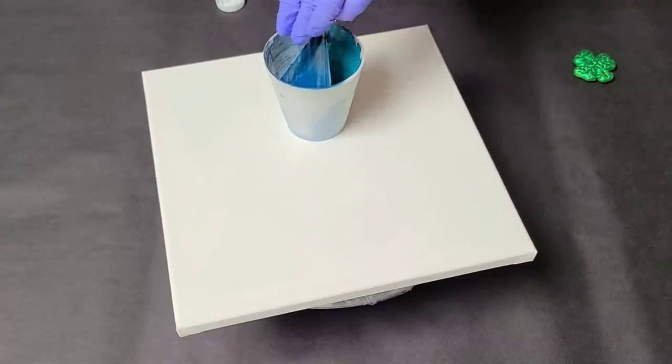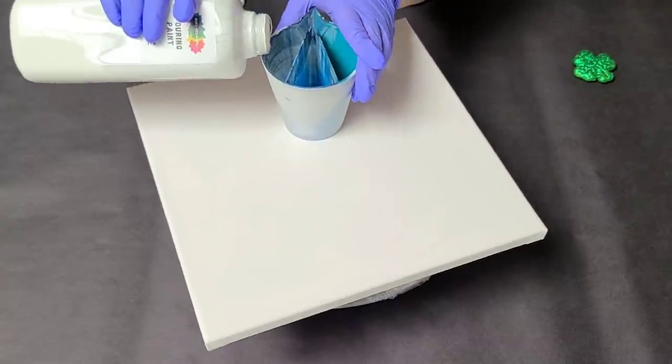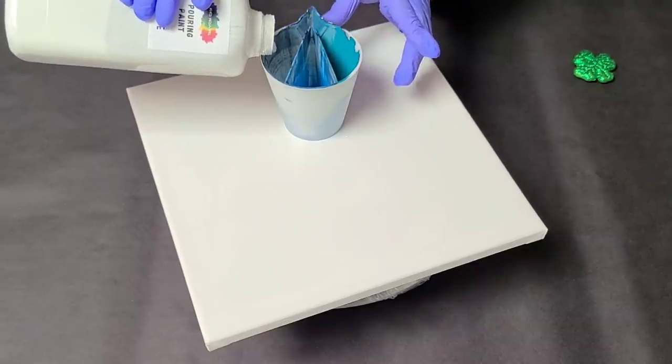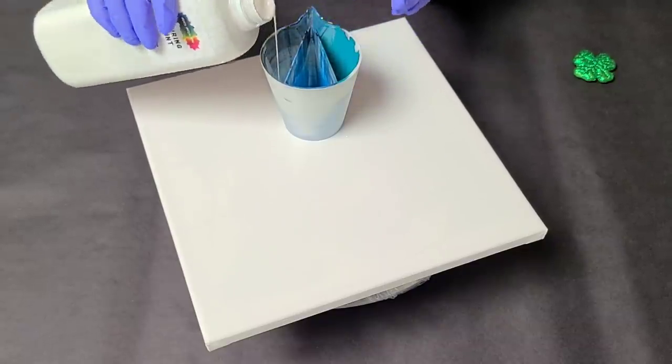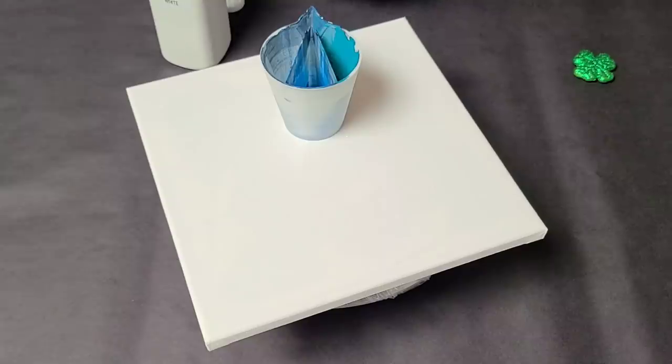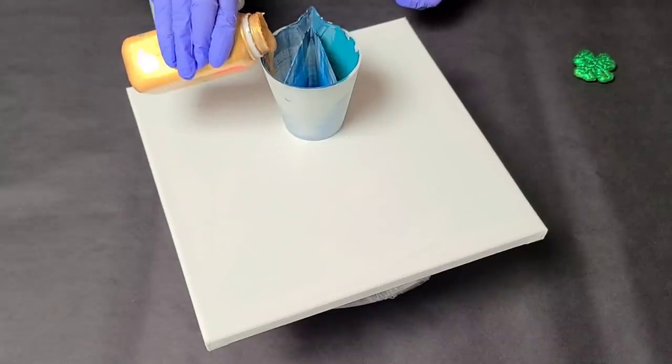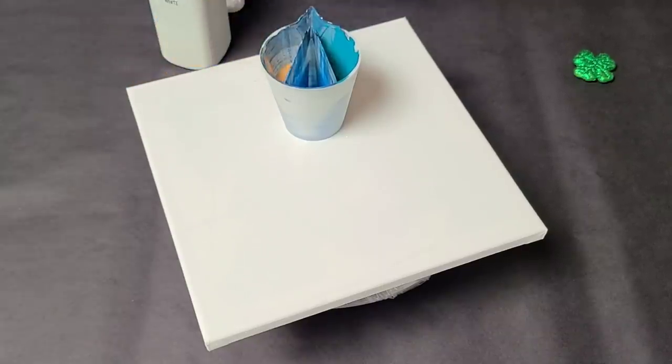So I'm going to kind of go light to dark a little bit and so I'm starting off with white. All the colors I'm using are Mixed Media Girl pouring paints. Next I'm going to use gold and of course you know for St. Patty's Day we've got to do something lots and lots of green.